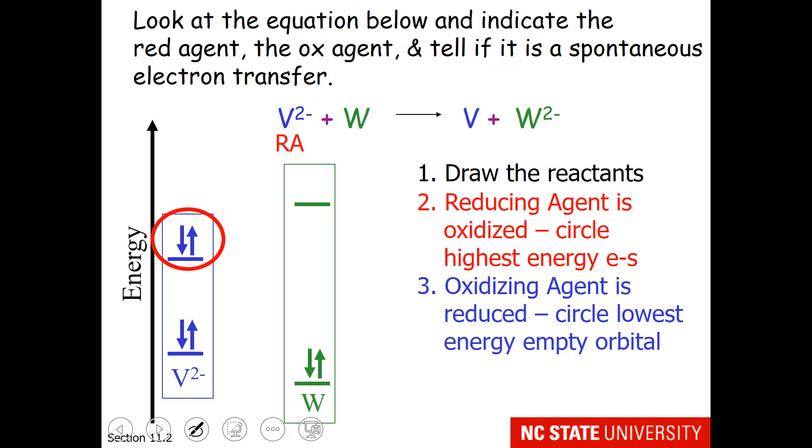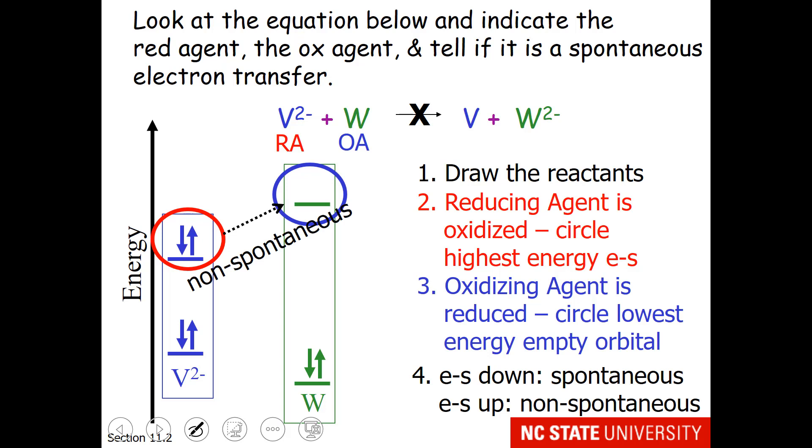Now I need to find the oxidizing agent. Obviously, if it's not the reducing agent, it's the oxidizing agent. But just to provide some detail, W is going from zero to two minus. That is a reduction for gaining electrons, and remember that the oxidizing agent is reduced. Now if I think about the electrons being added to W, they can't go here. It's already full of electrons. I have to circle the lowest energy empty orbital. So that is the one that is higher up. Now I need to think about V2 minuses electrons going to the empty slot in W. And I trust you can see that is uphill, and therefore non-spontaneous.